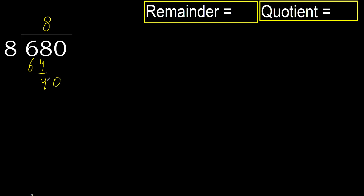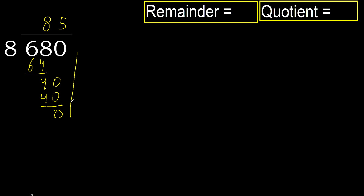Next, bring down 40. 8 multiplied by 5 is 40, which is not greater. Subtract: 40 minus 40 is 0. There is no next number, therefore finish.